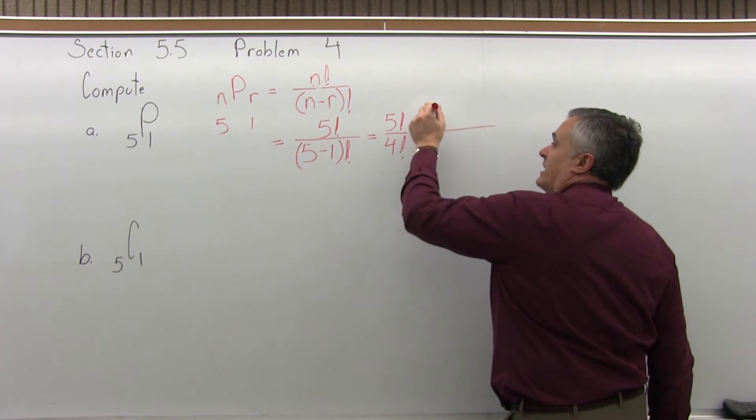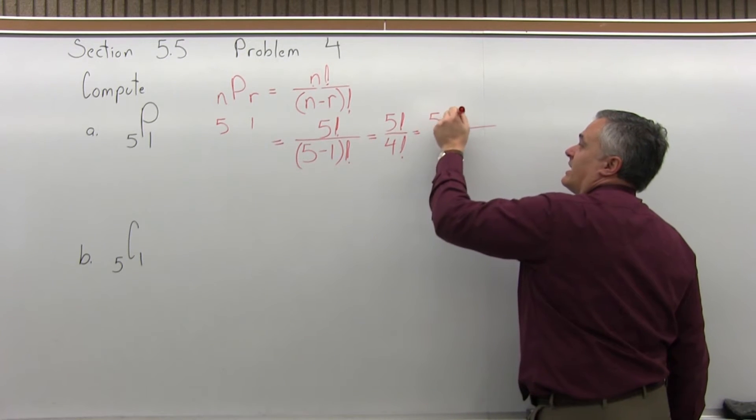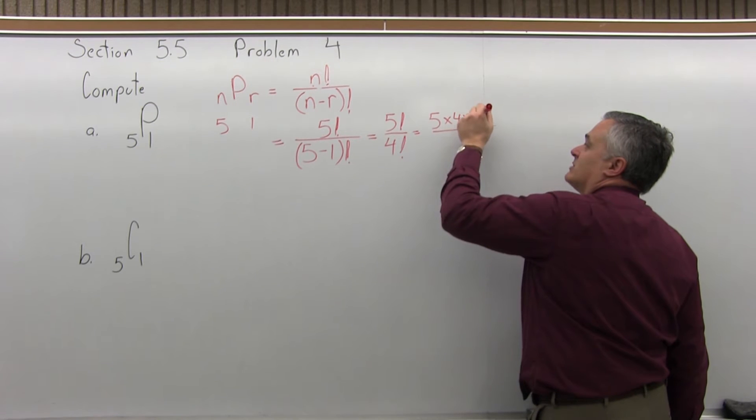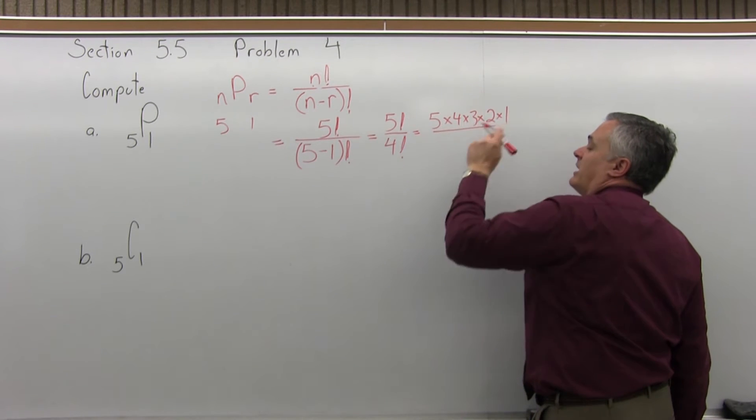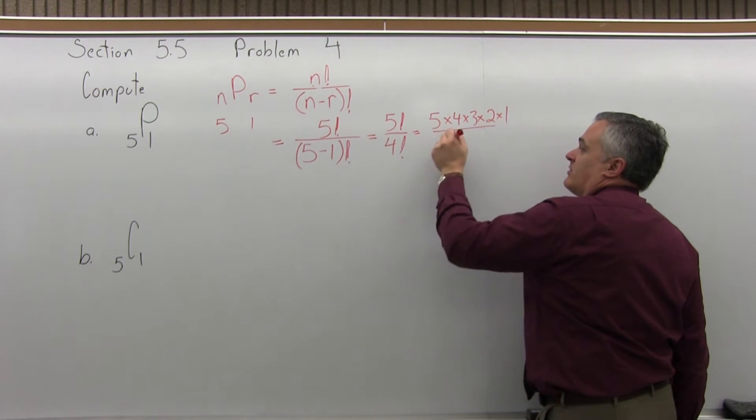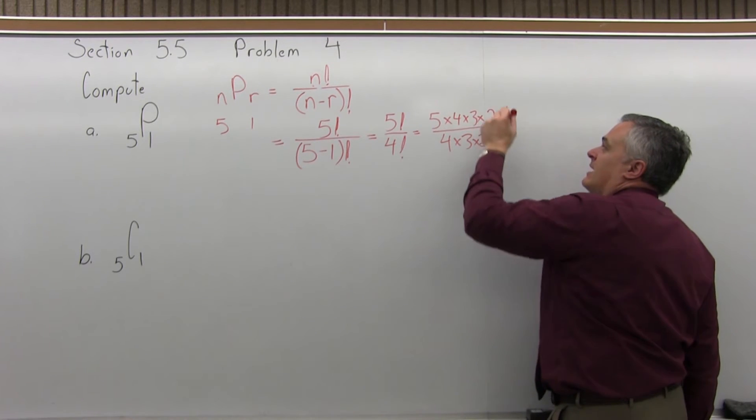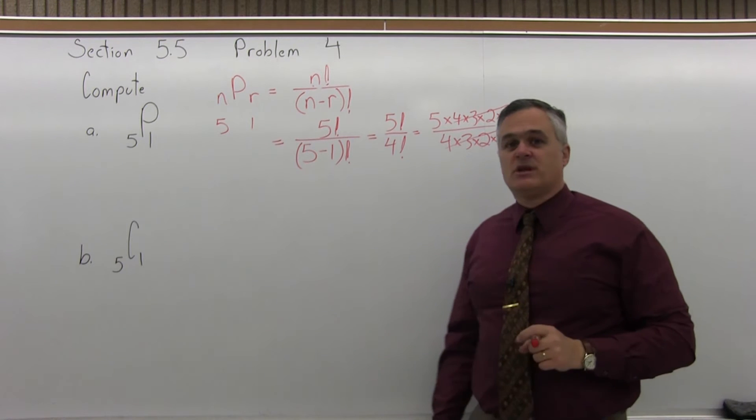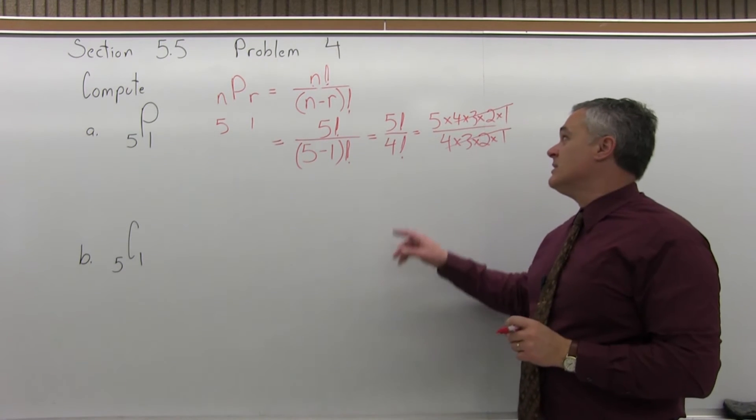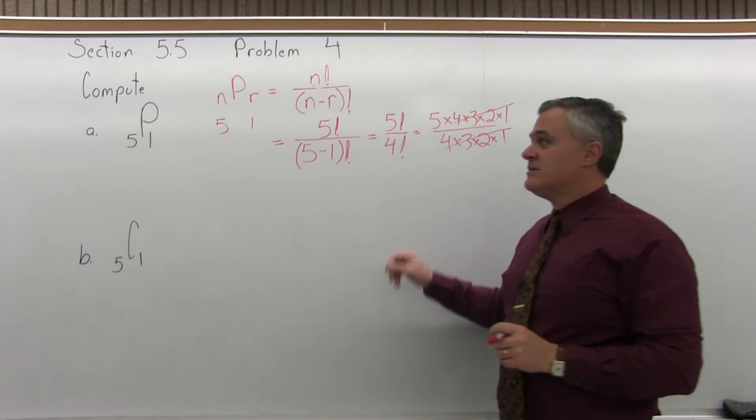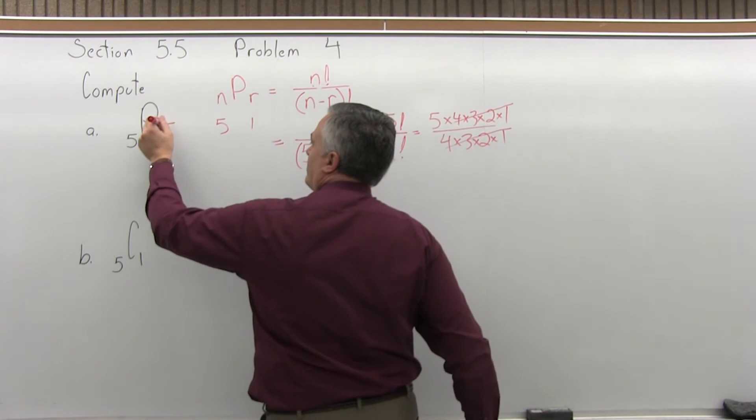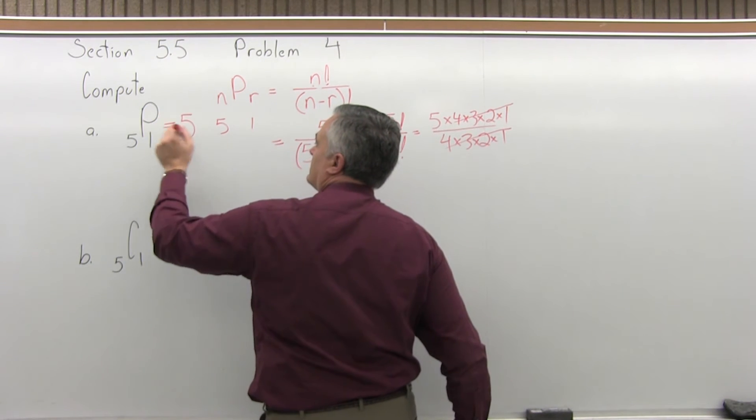So now I can do out the factorials. 5 factorial is 5 times 4 times 3 times 2 times 1, and in the denominator, 4 factorial is 4 times 3 times 2 times 1. And now you can cancel 4 times 3 times 2 times 1 in the top and in the bottom, leaving you with just 5. So 5 permutation 1 is equal to 5.